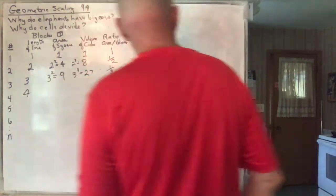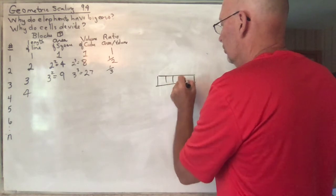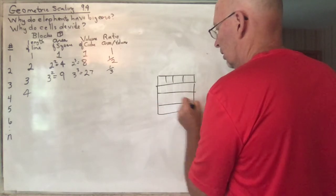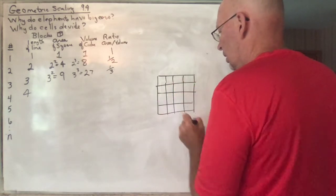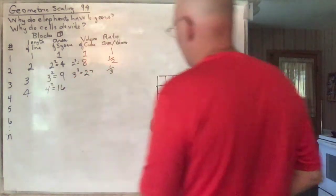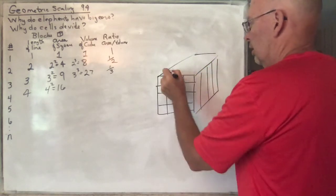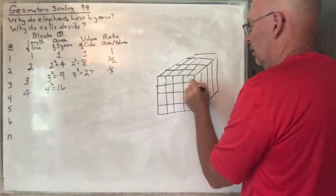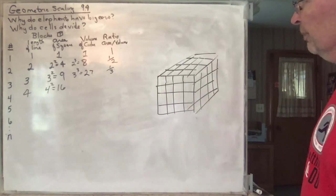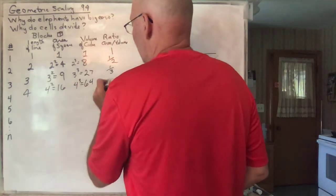On to four. Now you've got four in a row. Make a square out of it: four by four, four squared is 16. Make a cube out of it: four by four by four, which is a big old cube — four cubed is 64. So the ratio of area over volume is 16 over 64, which is one fourth.